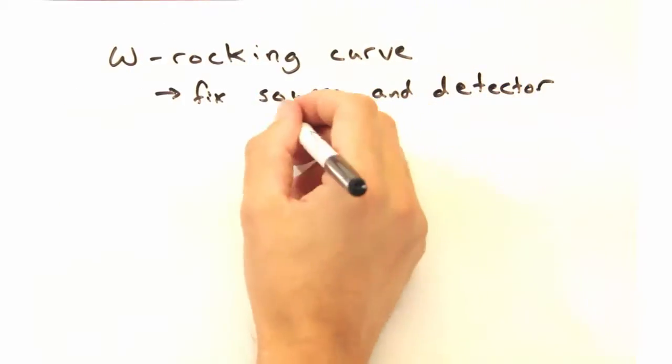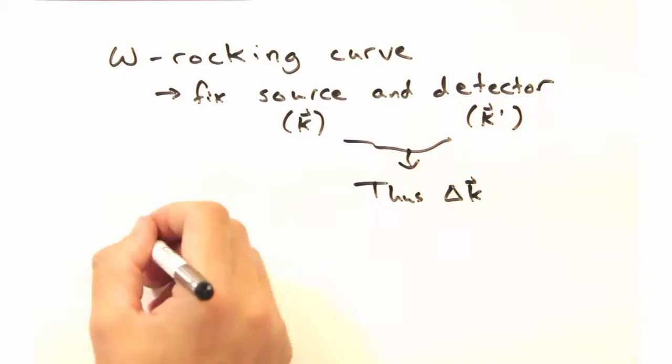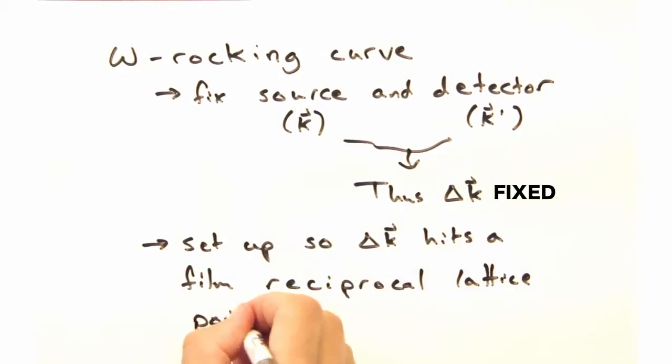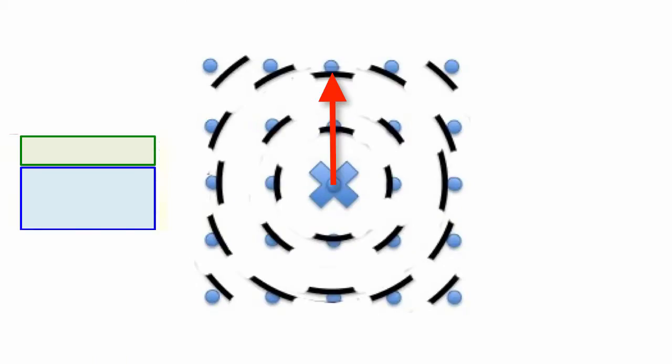For this type of scan, we fix our source and our detector so that our delta k vector never changes. This measurement takes a bit of planning. You want to set up delta k so that it hits one of our sample arcs.